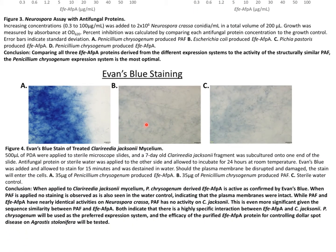With the Penicillium system established, we produced and purified more EFE-AFPA and tested it alongside PAF against Clarireadia jacksonii mycelium using Evans blue stain. Evans blue stain will only enter mycelium whose plasma membranes have been disrupted. In panel A, mycelium challenged with EFE-AFPA showed a high degree of staining, whereas in panel B, mycelium challenged with PAF showed no staining compared to the water control. So while EFE-AFPA and PAF are structurally similar and have similar activity against Neurospora crassa conidia, there is a distinct difference in activity against Clarireadia jacksonii mycelium.